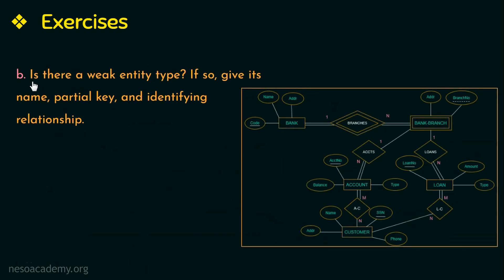The second question is: is there a weak entity type? If so, give its name, partial key, and identifying relationship. We need to identify if there is a weak entity type in this figure. Weak entity types are represented by a double rectangle. Here the weak entity type is bank branch, and the identifying relationship between the weak and strong entity type is represented by a double diamond.